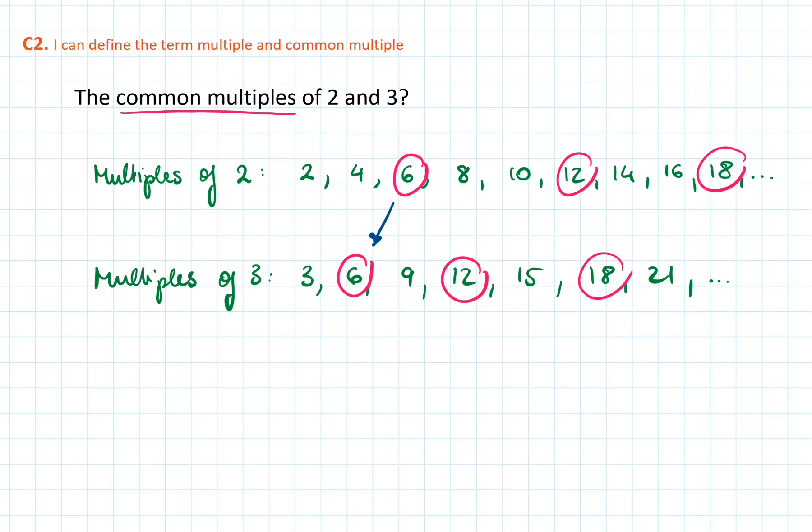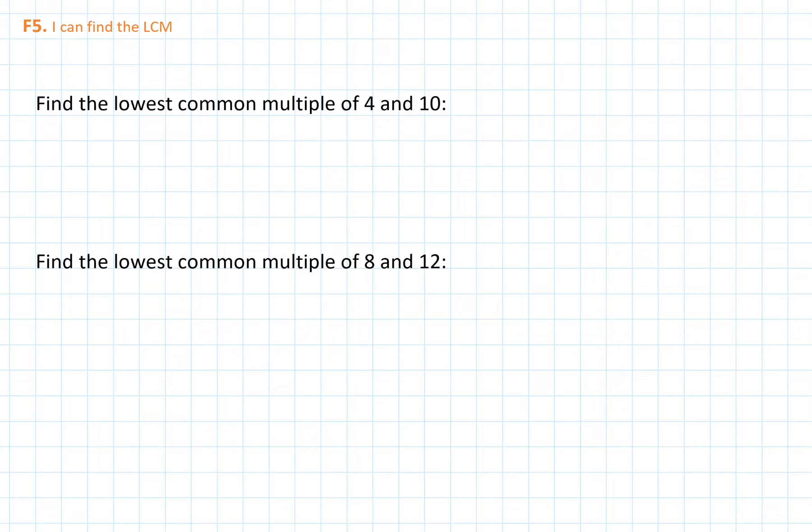These numbers will be 6, 12, 18 and so on — these numbers appear in both times tables. An interesting common multiple out of all of these is the one which is the lowest. So here that will be 6. The lowest of these numbers is called the lowest common multiple, or as it is often written, LCM.